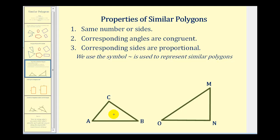Let's see if we can identify the corresponding angles in these two similar triangles. Notice that angle C is the angle that looks close to a measure of 90 degrees. Looking at the larger triangle, angle C would correspond with angle N. Because these two triangles are similar, these two angles are congruent, or equal in measure, and we can identify that by using the same number of arcs. Now let's take a look at angle A, which is the angle formed by the shortest side and the longest side of this triangle — it would correspond to angle M in the large triangle. Because these are corresponding angles, they are congruent.